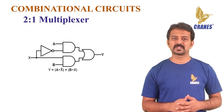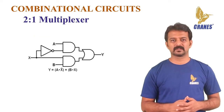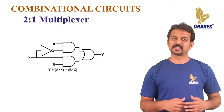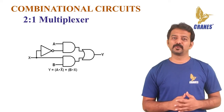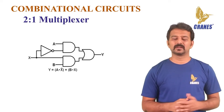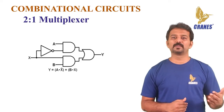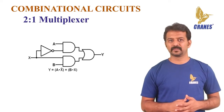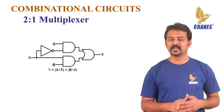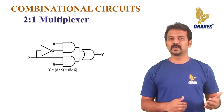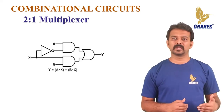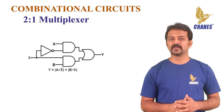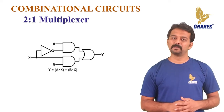Let us now understand the logic circuit of a 2-to-1 mux. It can be implemented using logic gates and consists of two AND gates, one NOT gate, and one OR gate. When the select line X equals 0, the output of the upper AND gate is A while the lower AND gate output is 0; thus the output generated by the OR gate is equal to A. Similarly, when X equals 1, the output of the lower AND gate is B while the upper AND gate output is 0; therefore, the output of the OR gate is B only.